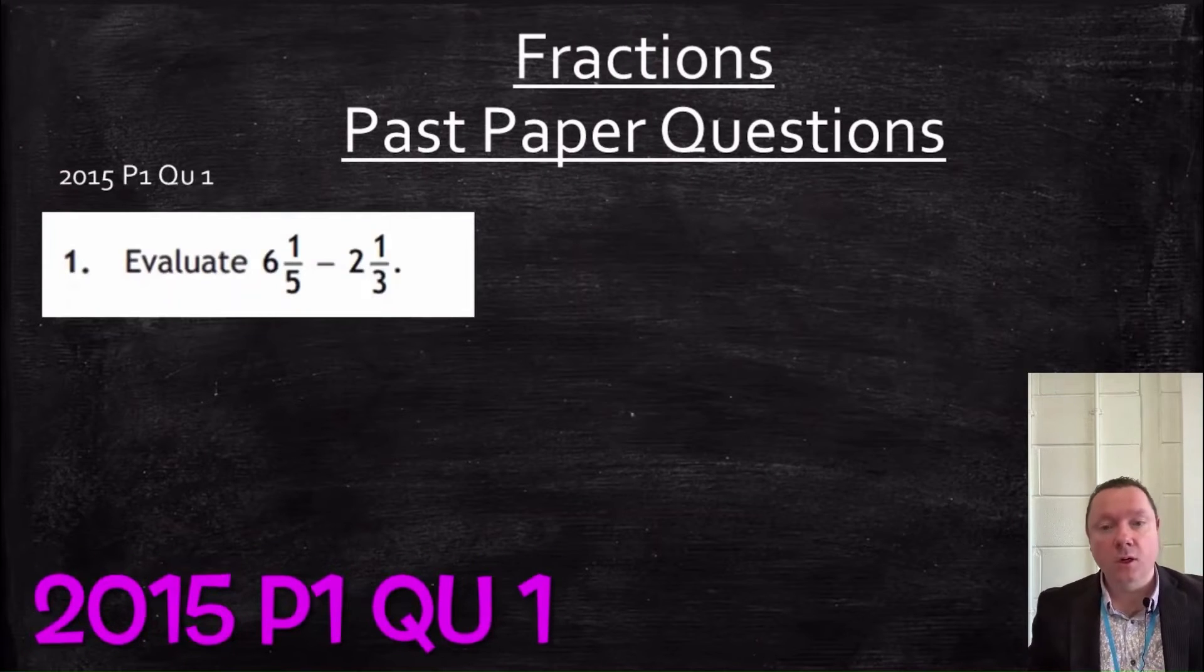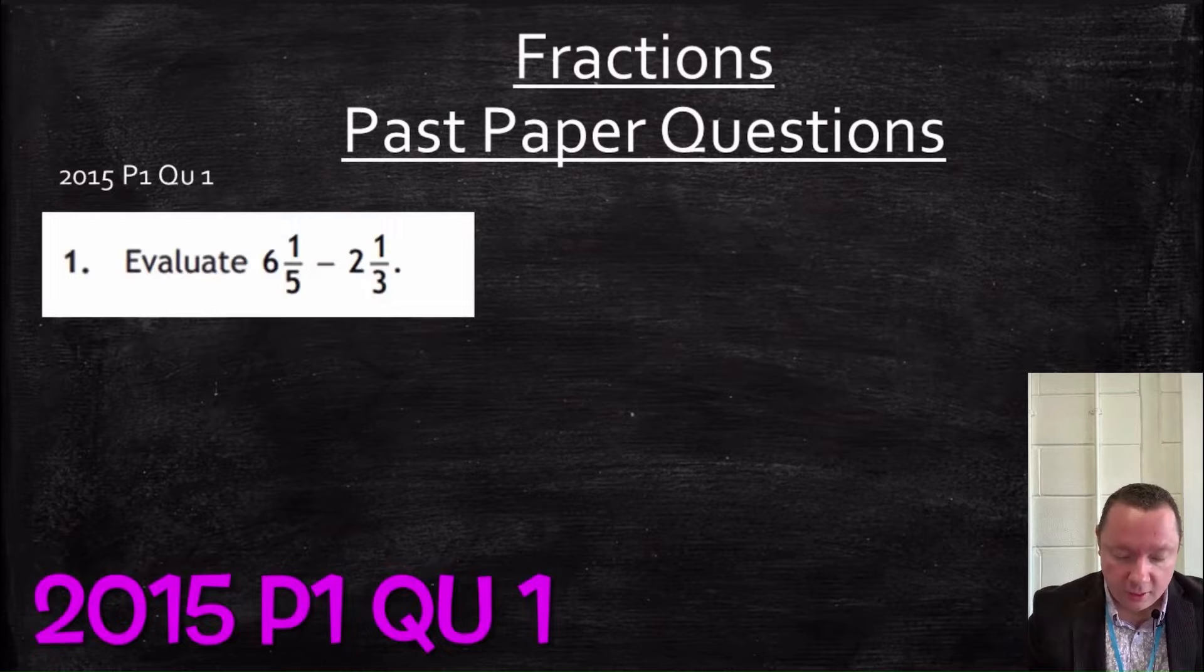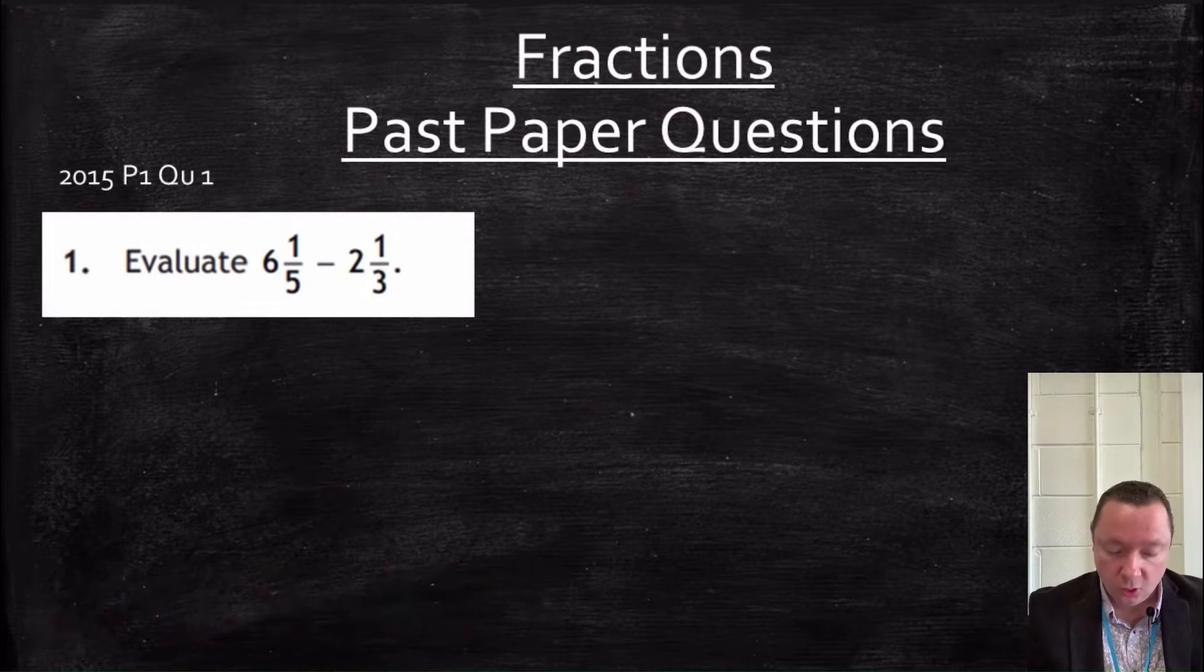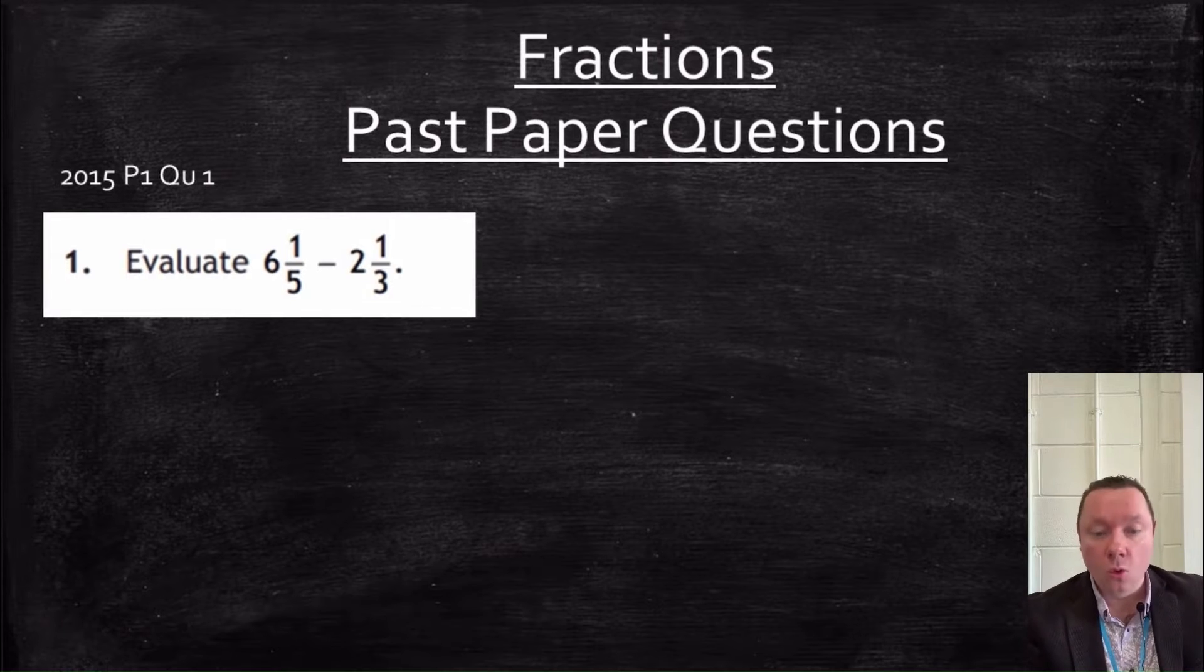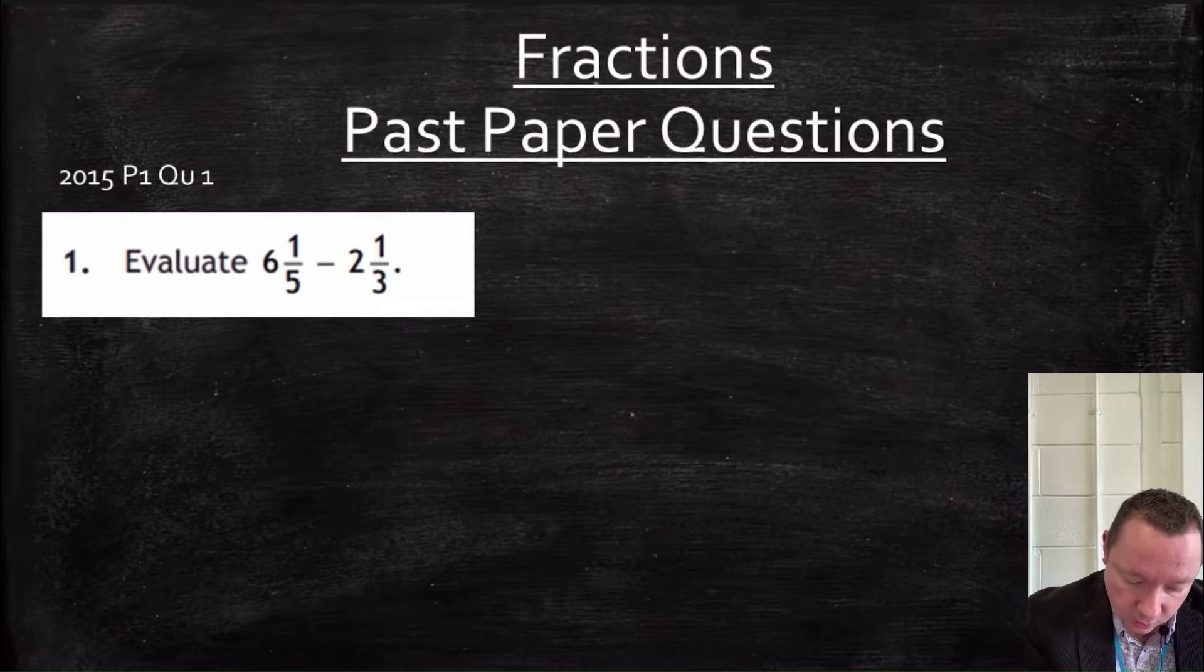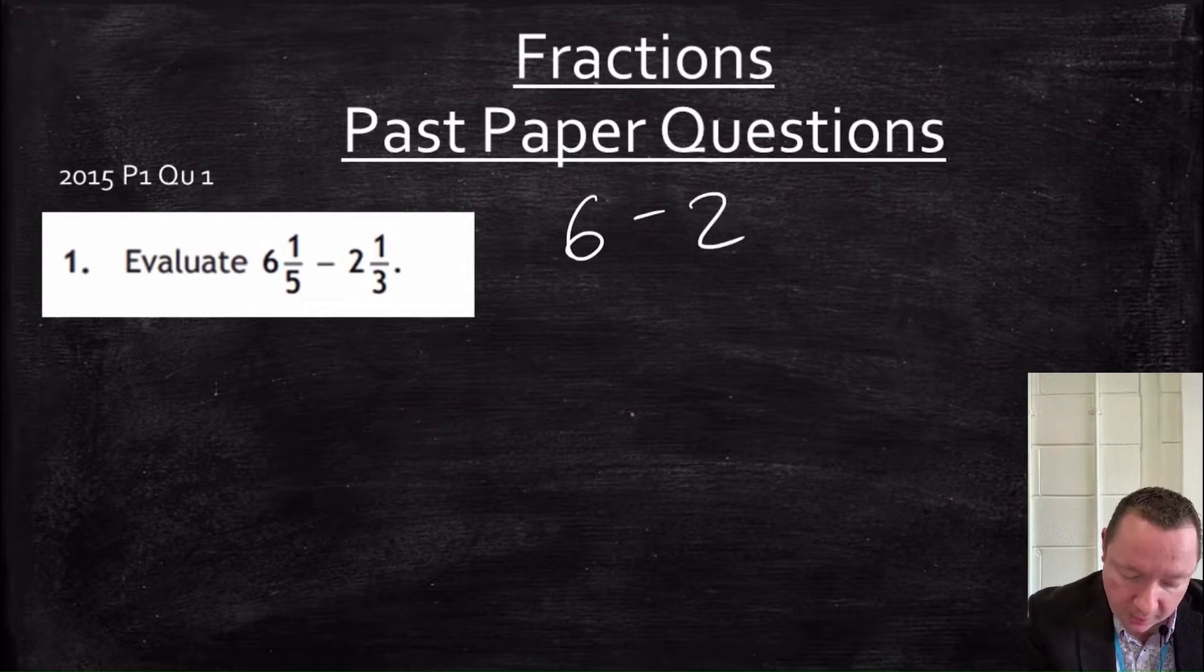2015, paper 1, question 1 again. So non-calculator. 6 and a fifth minus 2 and a third. So the first thing I'll do is I'll deal with the whole number parts. So I do 6 take away 2, and I get 4.